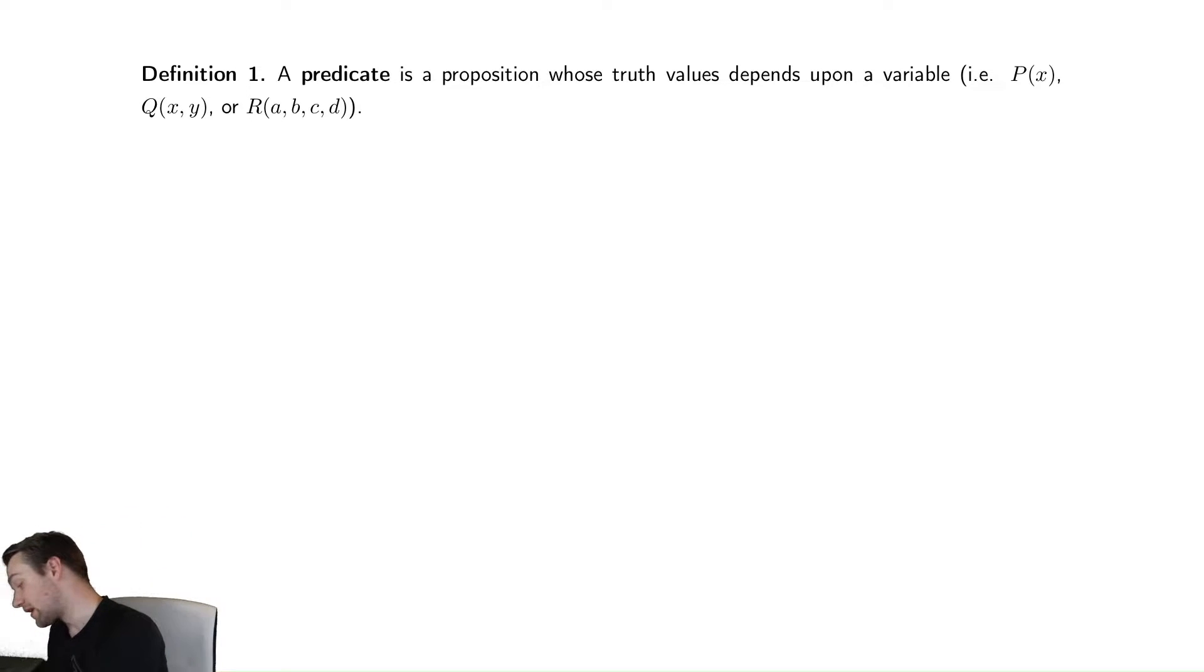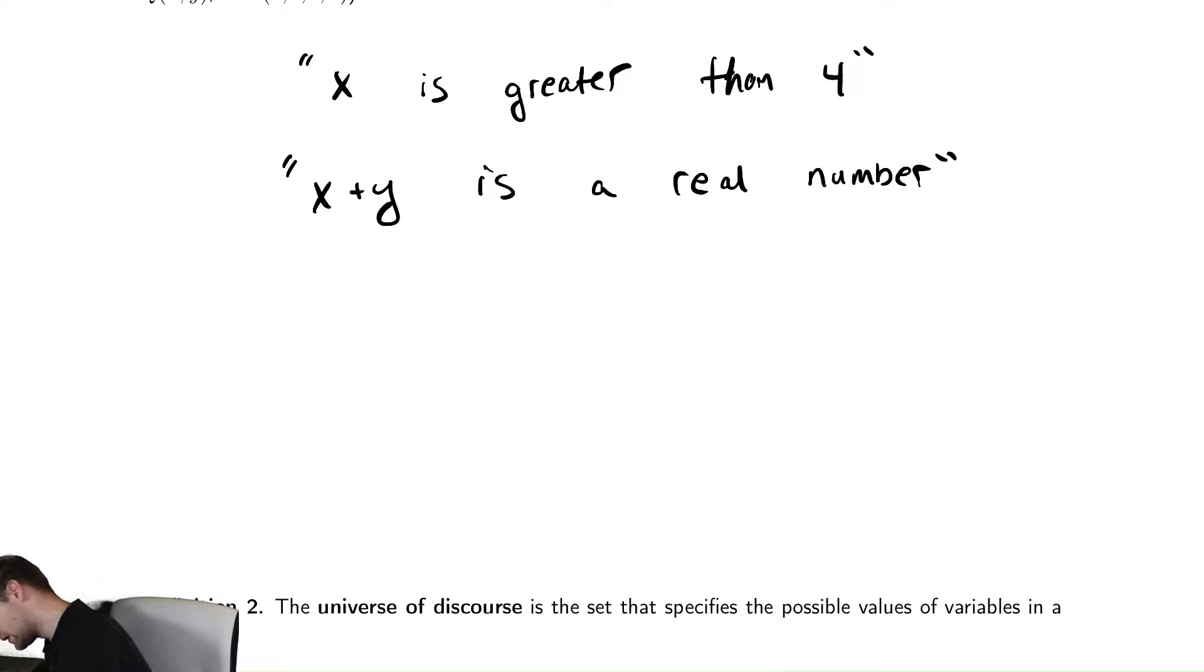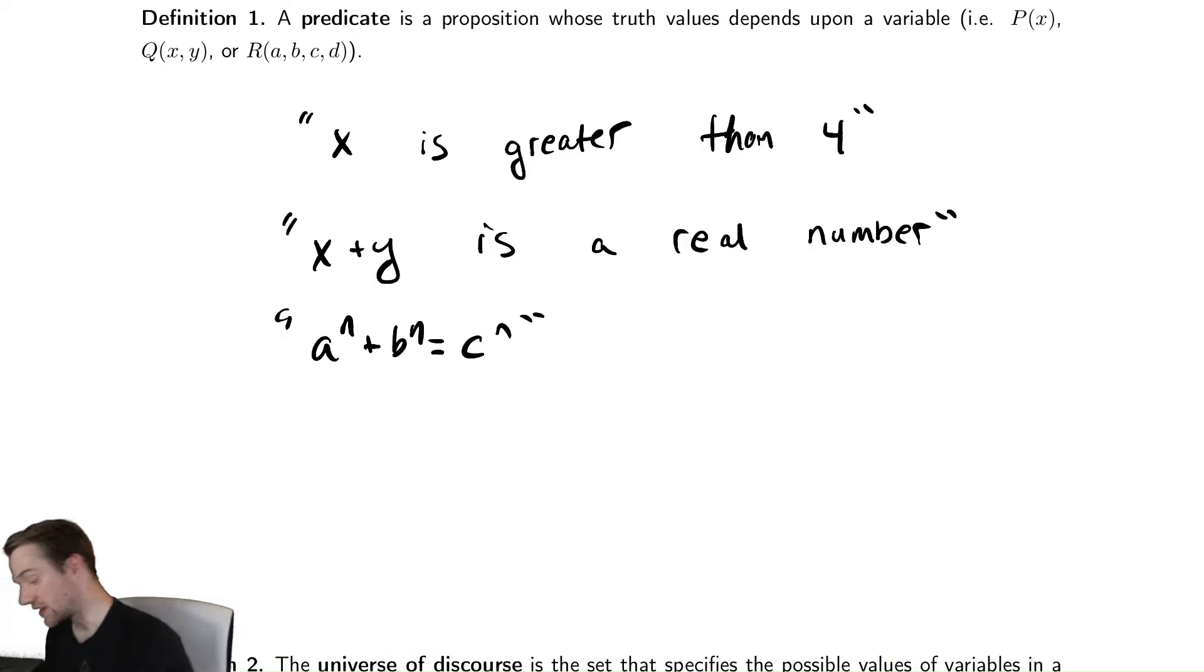So the first thing we're going to talk about is a predicate, which is just a proposition where a variable appears. So this can be things like x is greater than 4. It could be things like x plus y is a real number. Or it could be sentences like a to the n plus b to the n equals c to the n. So they can range from English and math to math to, they could even have just English in them.